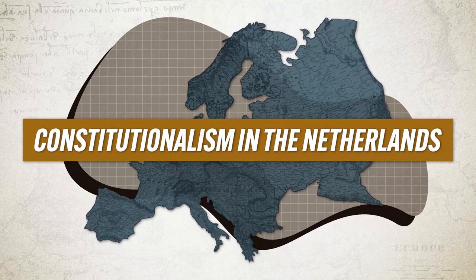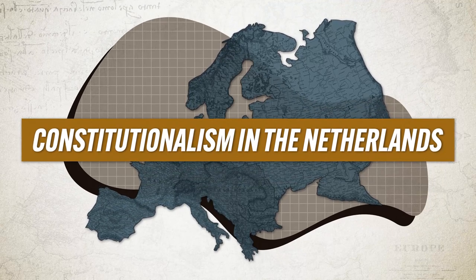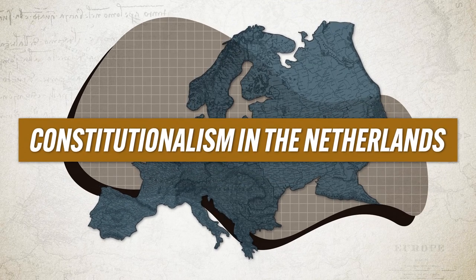And don't get confused — Netherlands is the place, the Dutch are the people. Now the Dutch had kind of a monarchy hangover after so long being trampled upon by the Habsburgs, and so they rejected a monarchical form of government in favor of a constitutional government.